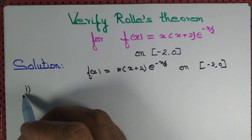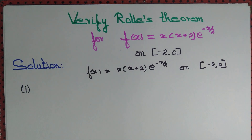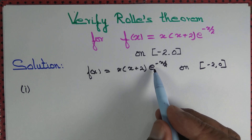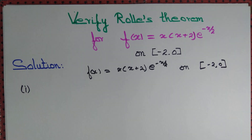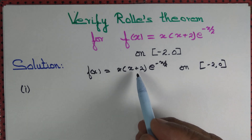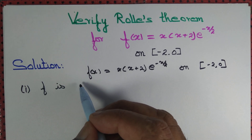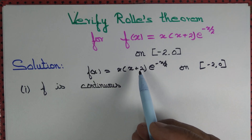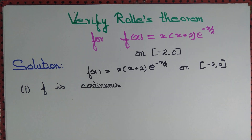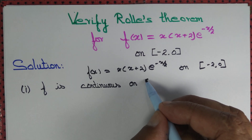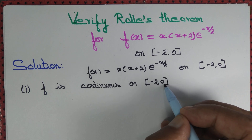Whenever we say we want to verify Rolle's theorem, we need to make sure three criteria are satisfied. First, f has to be continuous. Is this function continuous? The answer is yes. f is a product of a polynomial function x(x+2) and an exponential function. Both exponential and polynomial functions are continuous, so f is continuous. It is continuous throughout ℝ, but for Rolle's theorem we just need it to be continuous on the interval [-2, 0]. So the first criterion is satisfied.